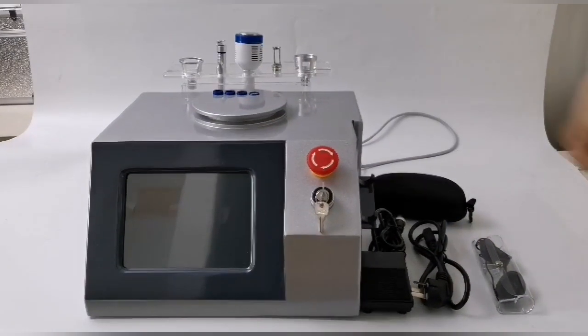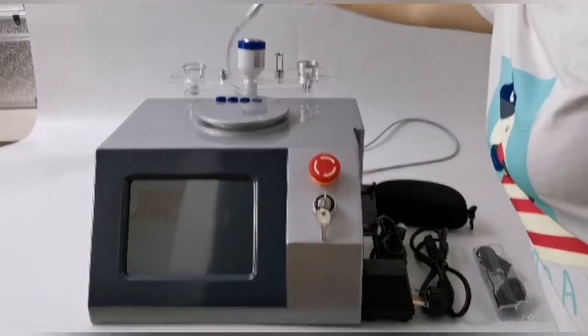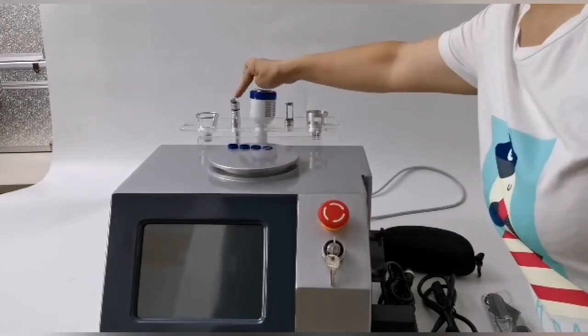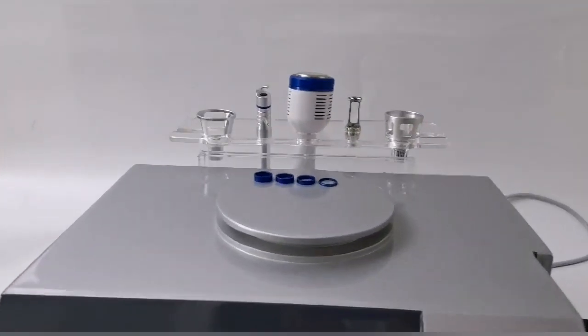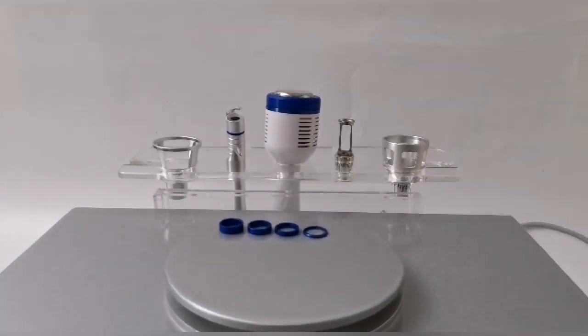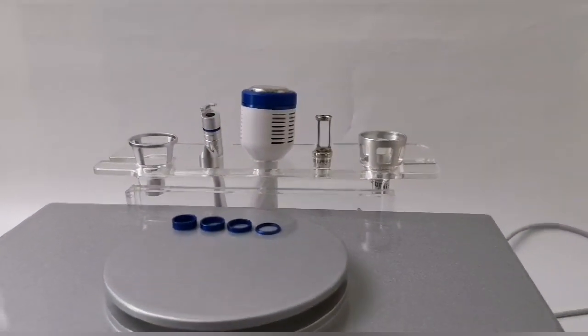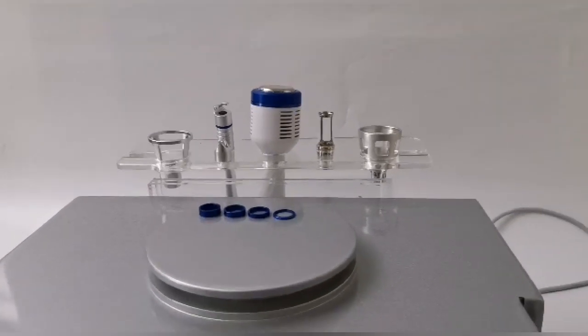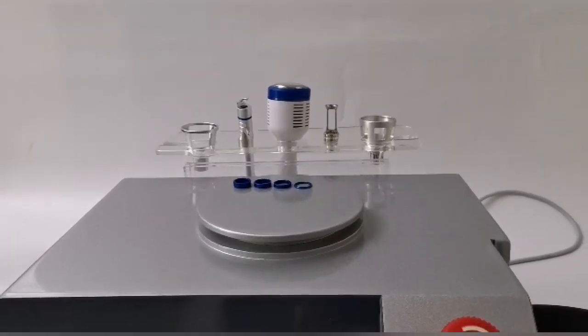This is a fiber optic handle. These are two fiber optic heads for removing red blood vessels. They are only different in shape, one straight and one curved, which can be selected according to personal habits.